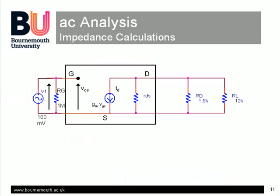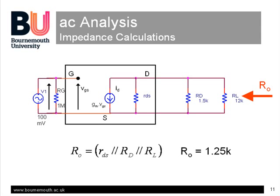We can also calculate the circuit impedances. Looking in from the output side, we see the three parallel resistors, RDS, RD and RL. These add up to a total of 1.25 kilo ohms, or 1.33 kilo ohms if we ignore the effect of RDS. Looking into the input, however, we see only the 1 mega ohm gate resistor. This compares with the much lower input impedance of an equivalent BJT stage.